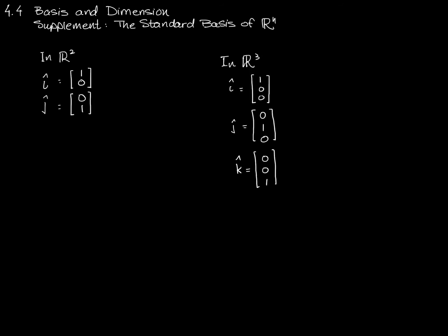In R2, we call the standard basis vectors i-hat and j-hat. i-hat is just the vector one, zero, and j-hat is the vector zero, one. And these are just the vectors in R2 that go from zero to one in the x-direction and zero to one in the y-direction.